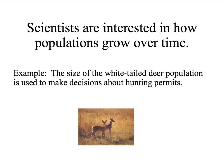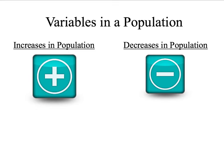Why do we care about this for biology? Well, scientists and a lot of other people are interested in how populations grow or change over time. For example, the size of the white-tailed deer population is used to make decisions about hunting permits. How many white-tailed deer we have from year to year needs to be determined so we know how many permits to give out.